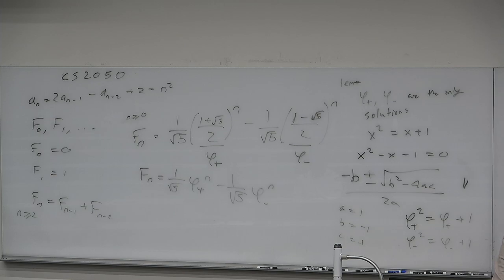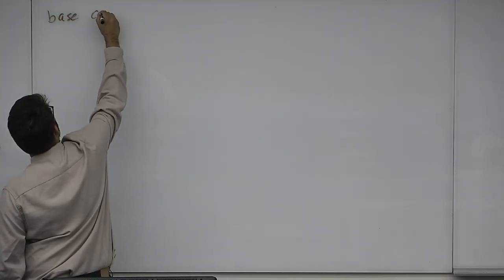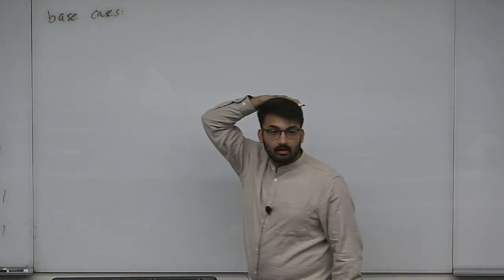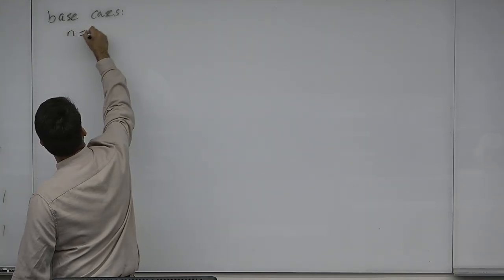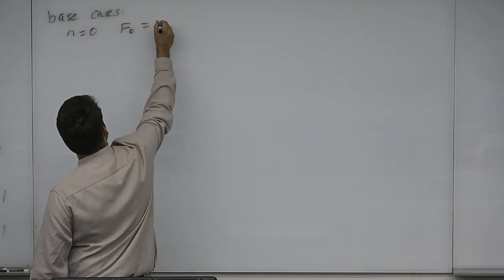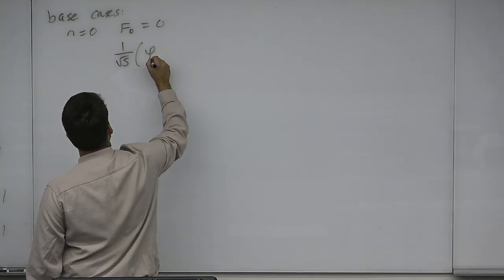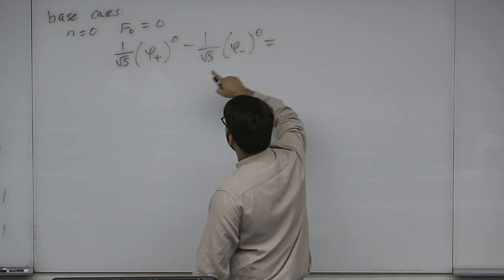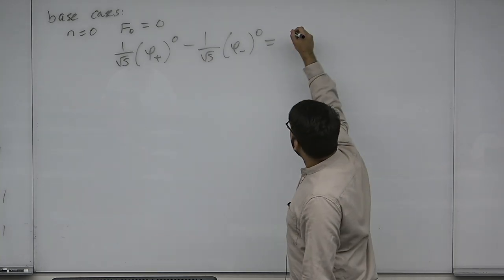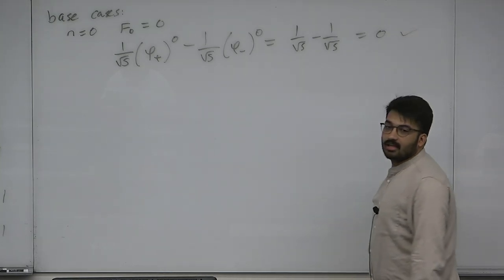Let's begin the proof. We have base cases — how many base cases do we need? Two. We need F(0) and F(1). For n = 0: F(0) = 0, and our formula gives (1/√5) × φ+^0 − (1/√5) × φ−^0 = 1/√5 − 1/√5 = 0. So we're good on that case.